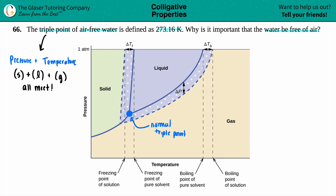They're saying that the temperature for water at this triple point — if this were water's curve — would be 273.16 Kelvin. And the triple point of air-free water is defined as exactly 273.16 Kelvin.